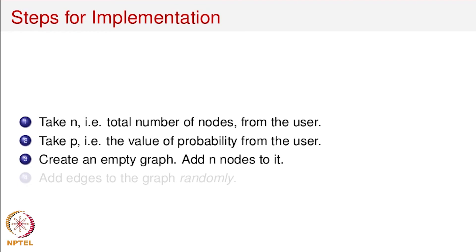Initially the network has only the nodes. We'll take an empty graph, add n nodes to it, and there are no edges in the network as of now. Edges will be added to the network randomly. Let me explain how we are going to randomly add the edges.